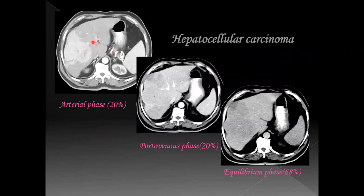This is a case of hepatocellular carcinoma where you can see a heterogeneously peripherally enhancing mass lesion noted in the right lobe of the liver in the arterial phase, which is showing washout in the portal venous and delayed phases.